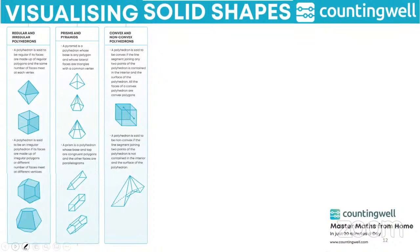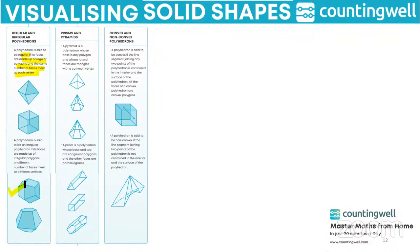Now let us see some types of polyhedron. First is regular and irregular. A polyhedron is said to be regular if its faces are made up of regular polygons and the same number of faces meet at each vertex. If the faces are made up of irregular polygons or different numbers of faces meet at different vertices, then it is an irregular polyhedron.